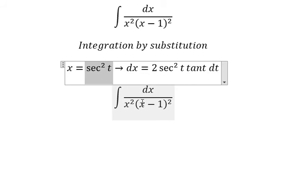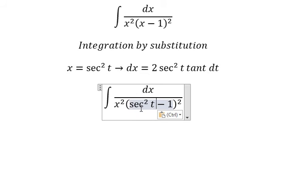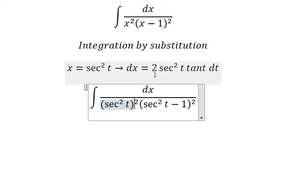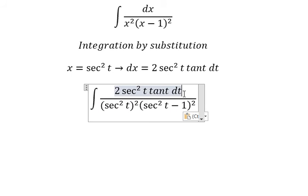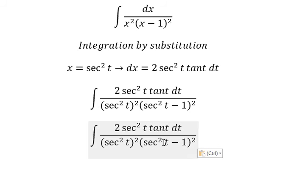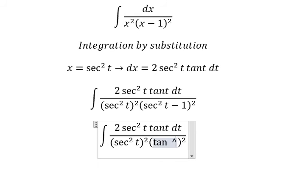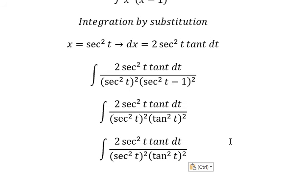We put this substitution into the integral. The x is replaced with the substitution, and secant of t squared minus one is changed to tan t squared. Now we need to simplify secant of t squared times tan t.